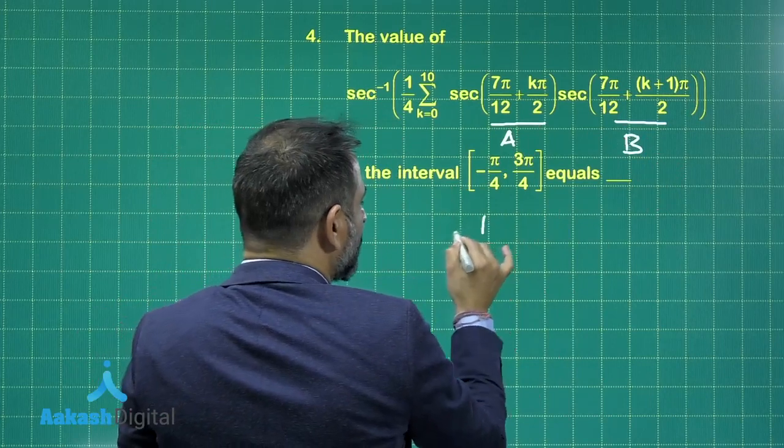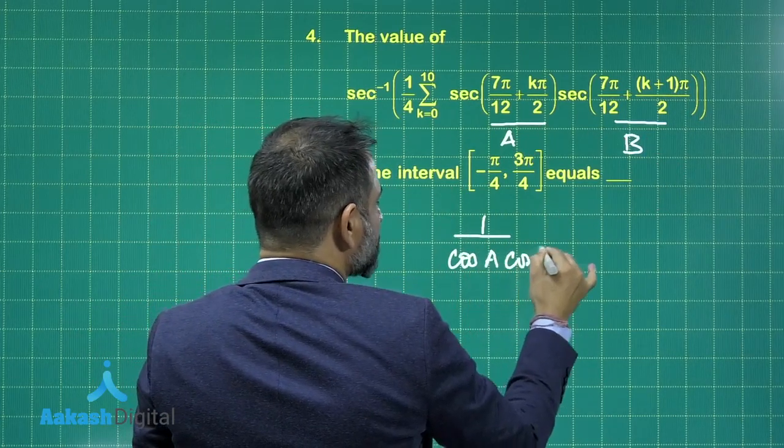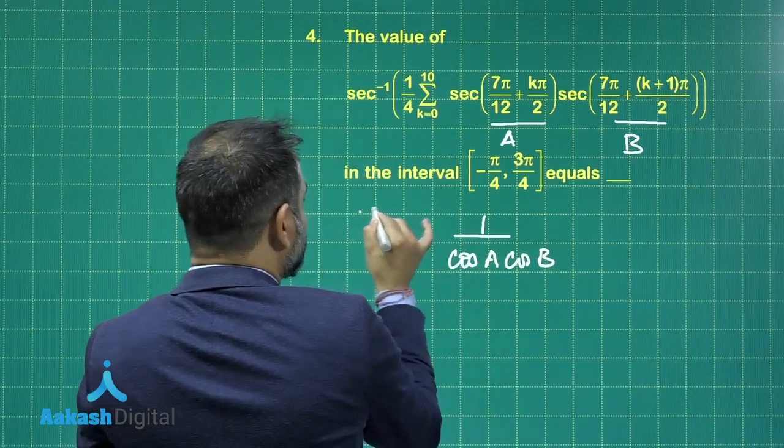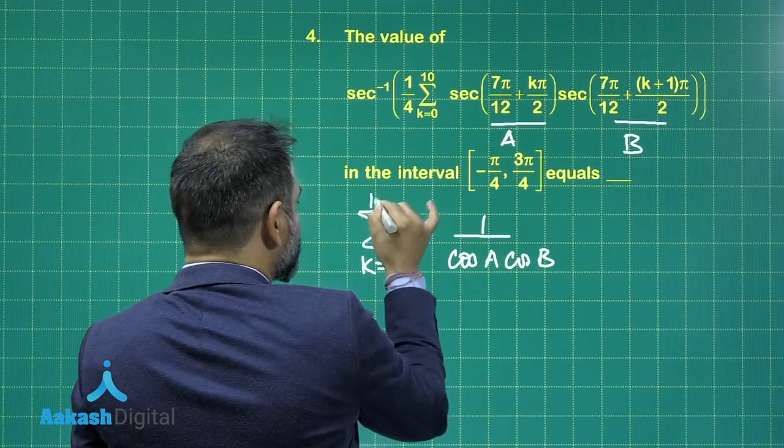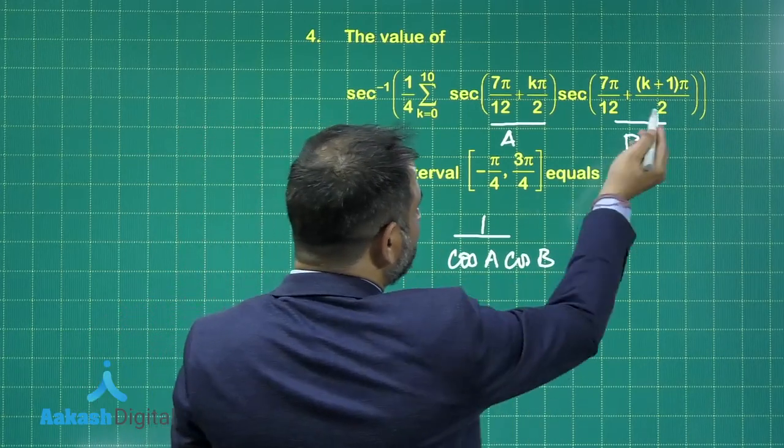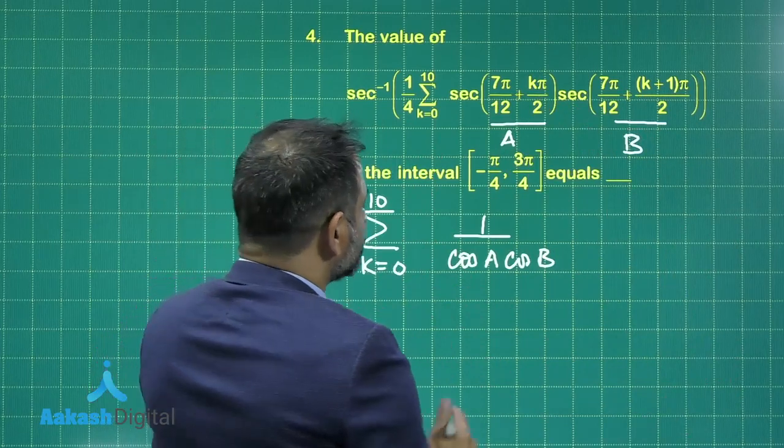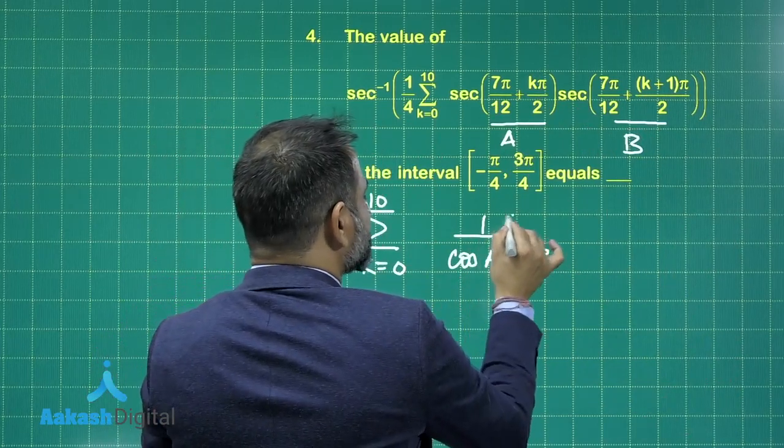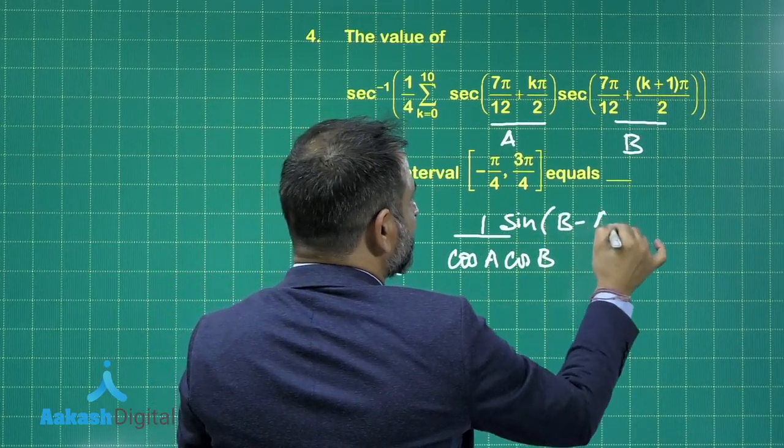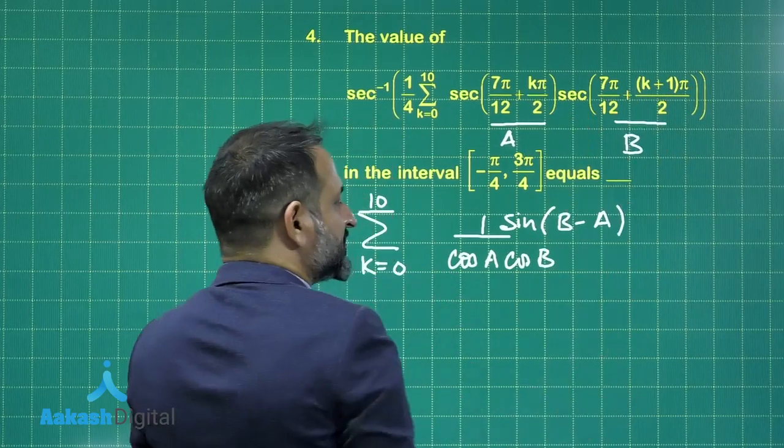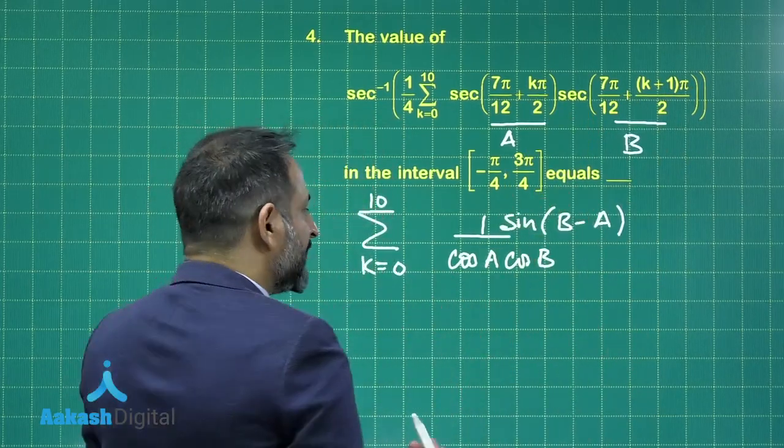So we have 1 upon cos a cos b and there is a sigma involved, summation involved from k equals 0 to 10. As I have told you that the difference of these two angles is equal to pi by 2, I am taking here sin of b minus a, that is difference of this minus this, and b minus a is pi by 2. So that is equal to 1. So that hardly matters.